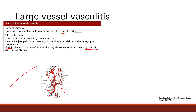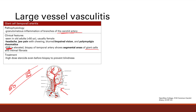The inflammation is segmental: you take the artery, you'll see giant cells in one segment, then no giant cells, then giant cells again. Treatment is high-dose steroids, and you give this even before biopsy to prevent blindness. Impaired vision is a symptom, so you must treat promptly with steroids.